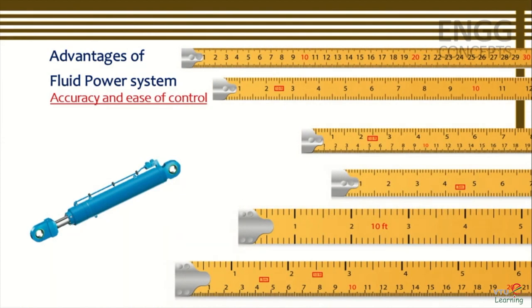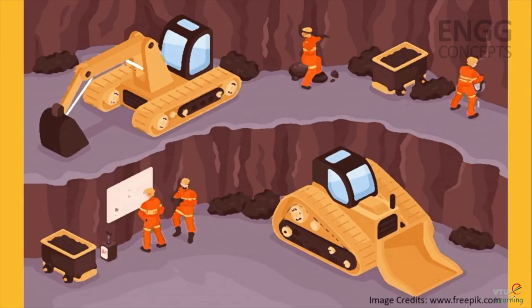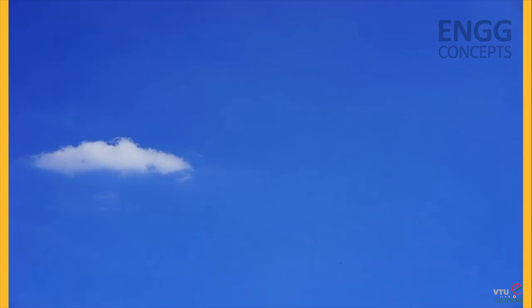Fluid power systems are very simple, easy to operate, and can be controlled accurately. They give greater flexibility without the need for complex mechanisms. Using hydraulic and pneumatic systems it is possible to start, stop, accelerate, or decelerate operations. Motion can be instantly reversed, and large forces can be positioned with greater accuracy using simple levers and push buttons. For example, in earth moving equipment, a bucket carrying a load can be raised or lowered by an operator using a lever.